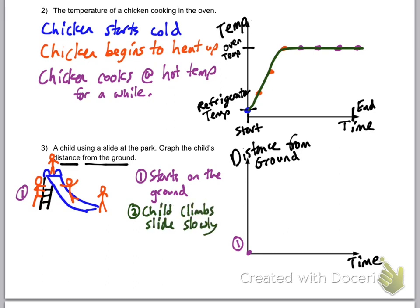Number two, the child is going to climb up slowly. Notice this, that the children go down slides way faster than they go up them. And we need to represent that on the graph here.